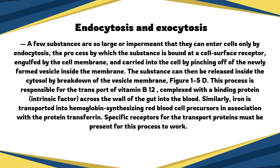The substance can then be released inside the cytosol by breakdown of the vesicle membrane. This process is responsible for the transport of vitamin B12 complex with the binding protein intrinsic factor across the wall of the gut into the blood. Similarly, iron is transported into hemoglobin-synthesizing red blood cell precursors in association with a protein, transferrin. Specific receptors for the transport proteins must be present for this process to work.